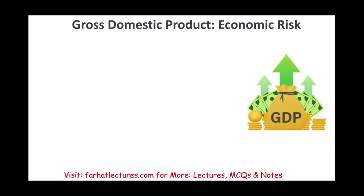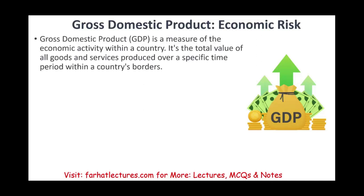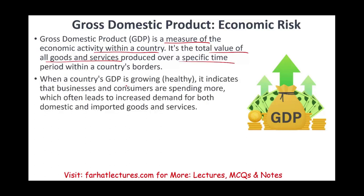One of the economic risks is GDP — gross domestic product. GDP is a measure of economic activity within a country's borders: the total value of goods and services produced over a specific period of time. If you are operating in a foreign country, you want to look at their GDP. When GDP is growing, it means the economy is healthy and indicates that businesses and consumers are spending more — great if you're operating or selling to that country.